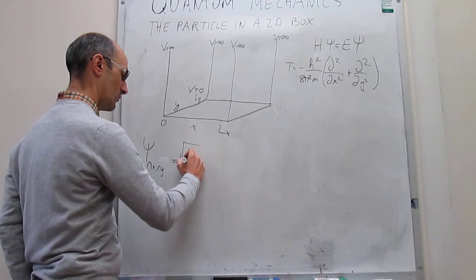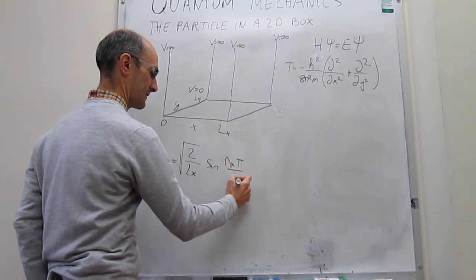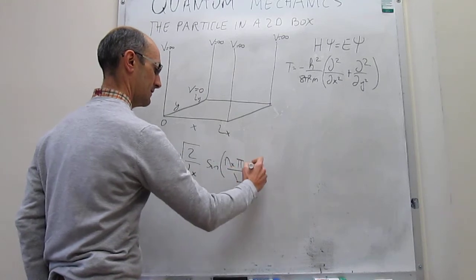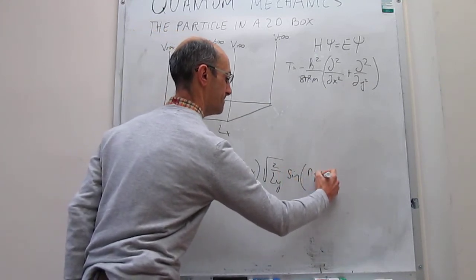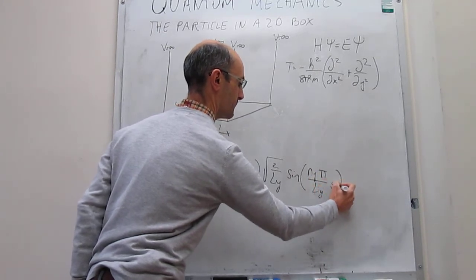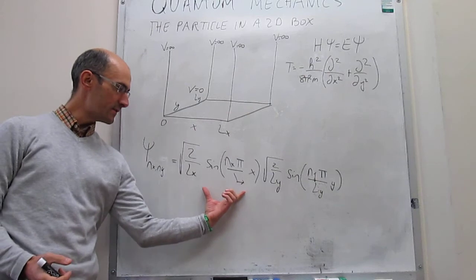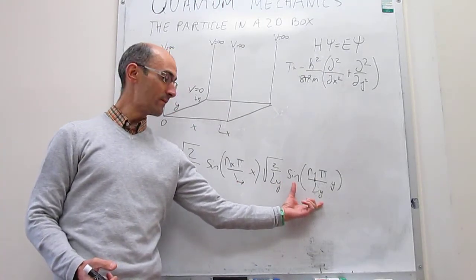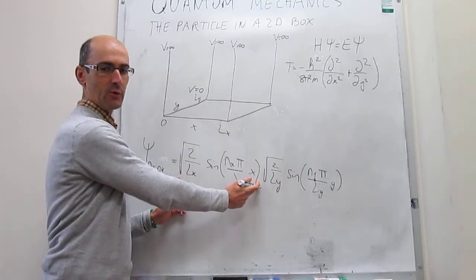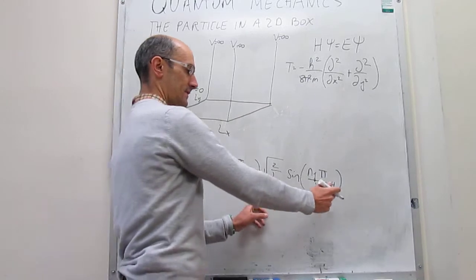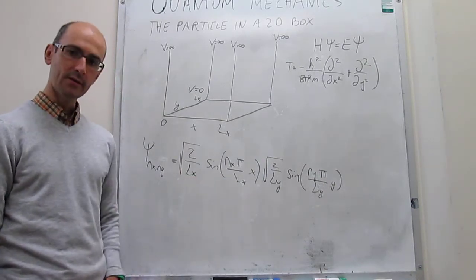The wave function is going to be equal to the square root of 2 over Lx, times sine of (nxπx/Lx), times the square root of 2 over Ly, times sine of (nyπy/Ly). Something very interesting here is to notice that this wave function seems to be the product of the wave functions along one dimension on each axis. This is identical to the wave function for the particle in a 1D box moving along the x-axis, multiplied by the wave function for the particle in a 1D box moving only along the y-axis. So the total wave function is the product of two of those 1D wave functions.